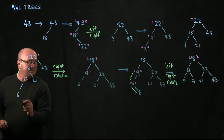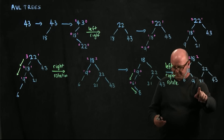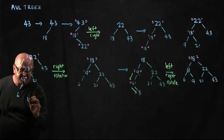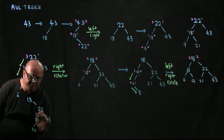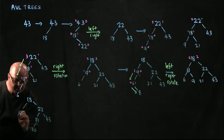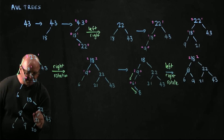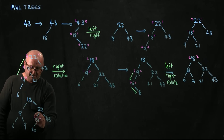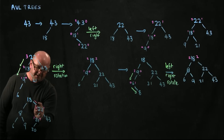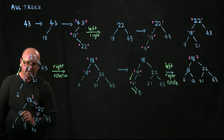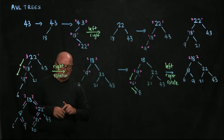Next we add a 20. Our 20 is bigger than 18, less than 22, and less than 21, so 20 becomes the left child of 21. Is this balanced? The 21 has 1 and 0. The 22 has 2 and 1 — that's okay. The 18's longest path is 3 edges on the right and 2 on the left — so this is still a balanced tree.